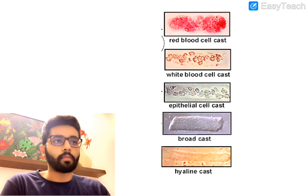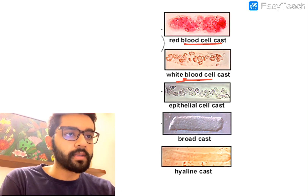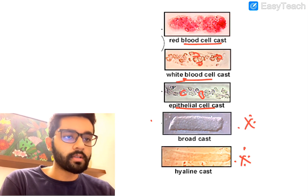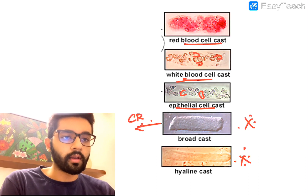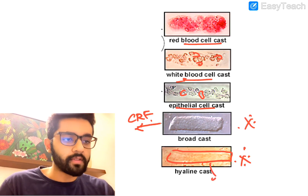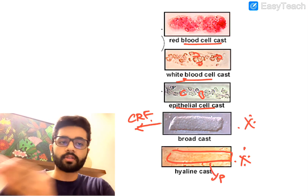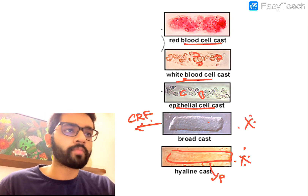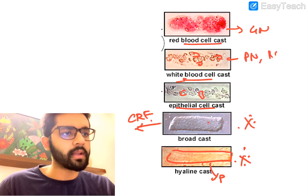On microscopy: this is how an RBC cast looks. WBC casts have a typical appearance you can identify. Epithelial cell casts contain renal epithelial cells. The broad cast is very typical for chronic renal failure. The hyaline cast is smooth and difficult to identify — physiological but seen in diuretic use and severe exercise. Broad cast equals chronic renal failure and worst prognosis. RBC cast equals glomerulonephritis. WBC cast equals pyelonephritis or interstitial nephritis. Epithelial cast equals acute tubular necrosis.